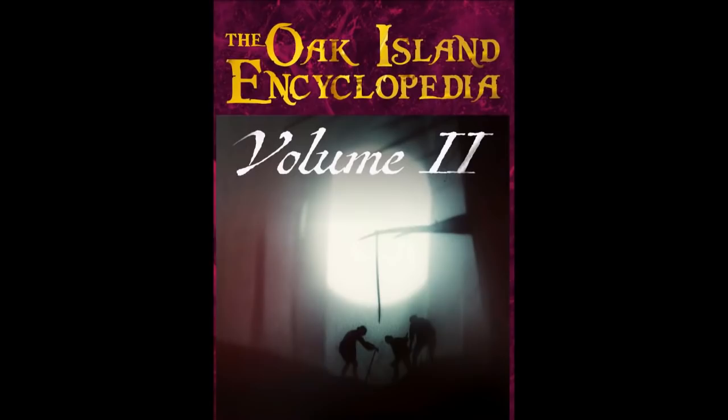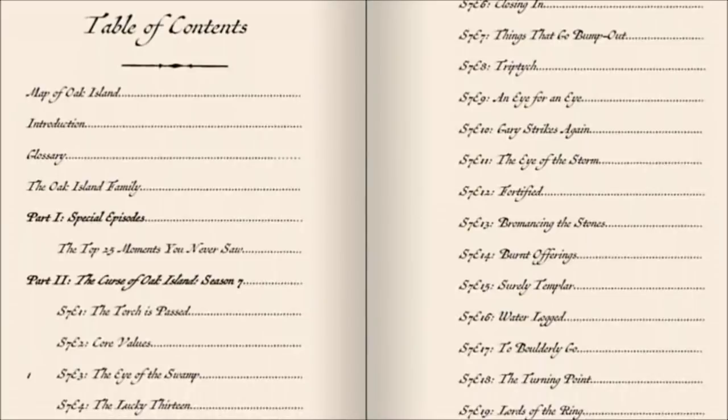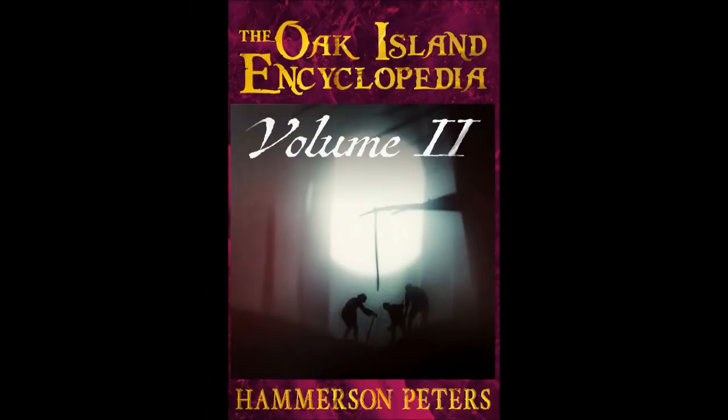This book contains plot summaries and analyses for each episode of Season 7 of The Curse of Oak Island, and includes chapters on three new theories regarding the nature of Oak Island's subterranean contents and the identities of its depositors. My book is available in both full color and much less expensive black and white, and would make a great gift for any hardcore fan of The Curse of Oak Island. If you'd like to get a copy of this book, please check out the link in the description.